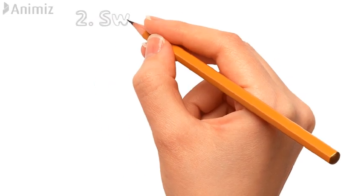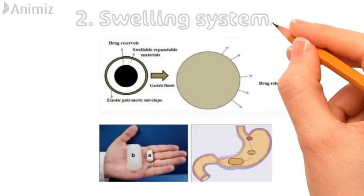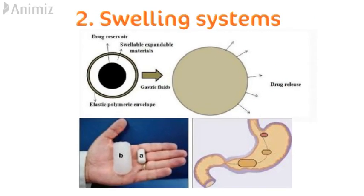Having discussed all the floating types, the second major type is swellable systems. This system consists of a drug reservoir surrounded by a highly swellable, expandable polymer. These systems swell to an extent that prevents their exit from the stomach through the pylorus.